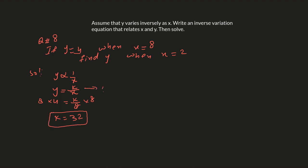We can name this equation number one: y equals 32 over x. Now we need to figure out the value of y when x equals 2. Simply substitute x equals 2: y equals 32 over 2, so y equals 16.